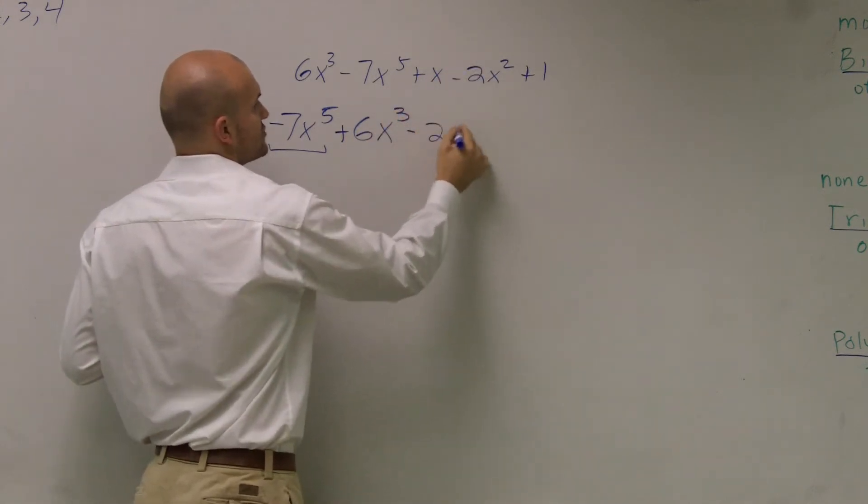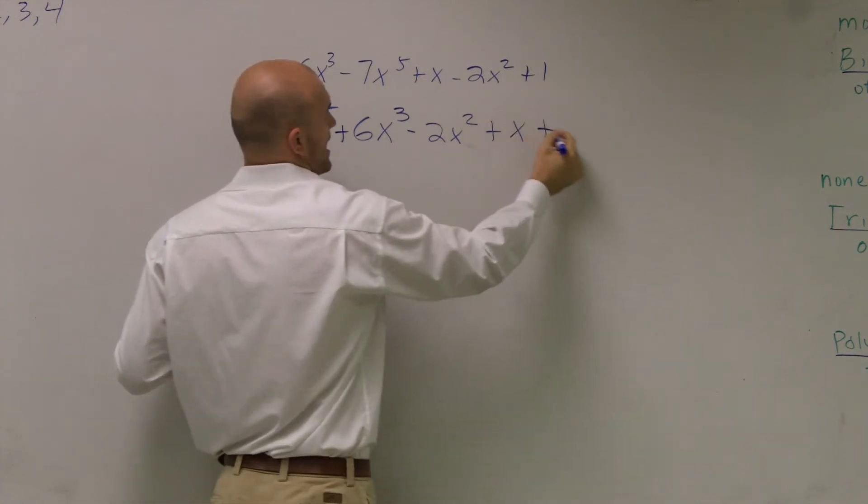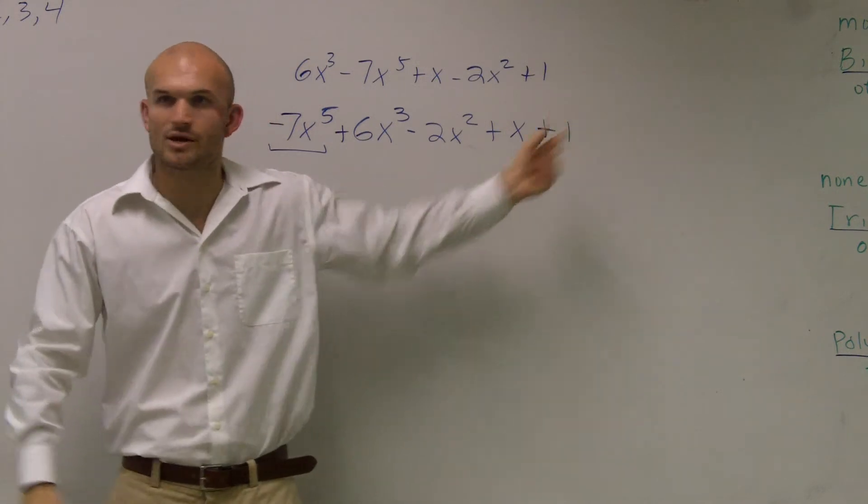Then the next one is a negative 2x squared plus x to the first. And then my constant is always going to be at the end, because remember, your constant can be multiplied by x to the zero, which I represented.